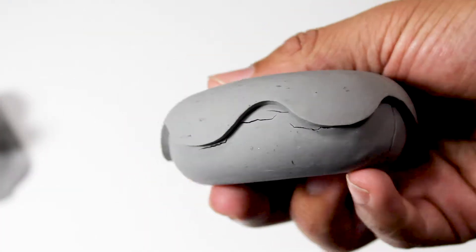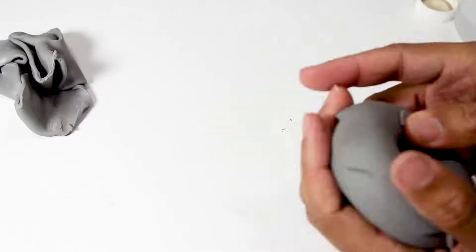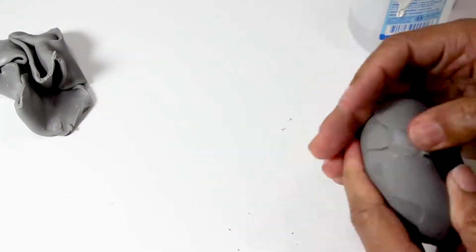So, you're going to take some more Sculpey. You're going to take some alcohol. You're going to make it soft, and you're going to fill in those cracks. Smooth it out with your fingers as much as you can.